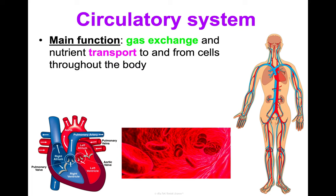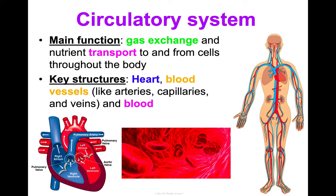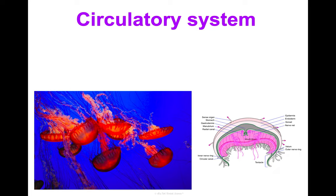First, let's talk about the circulatory system, also sometimes called the cardiovascular system — they refer to the same thing. Its main purpose is gas exchange in your cells as well as nutrient transport to and from cells throughout your body, using blood to accomplish that. Key structures include the heart as the main organ, blood vessels such as arteries, capillaries, and veins, and of course your blood. A common misconception: your blood is not blue versus red — diagrams use those colors to differentiate oxygenated versus deoxygenated blood, but your blood is never actually blue.